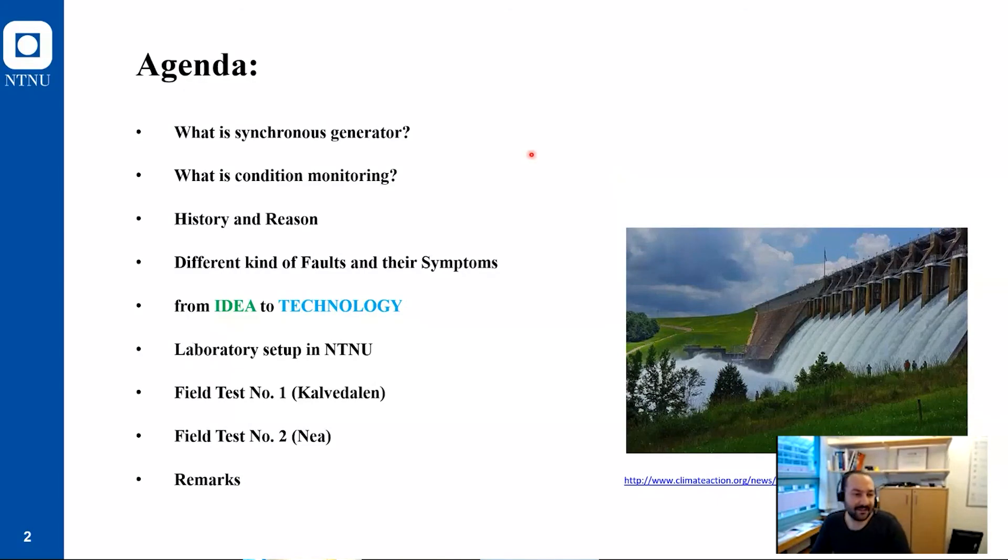What I'm going to present is what is the synchronous generator, what is condition monitoring, why do we need condition monitoring, the history and reason, different types of faults and the symptoms that result from these faults. The main part is from the idea to technology that resulted in a patent. We have a laboratory setup that we use for verification and tested the idea in real power plants, Calvodolin and Snell. At the end I will talk about remarks of this project.